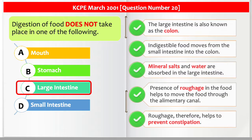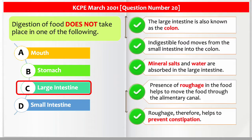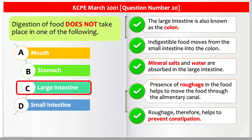The large intestine is also known as the colon. Indigestible food moves from the small intestine into the colon. Mineral salts and water are absorbed in the large intestine. Presence of roughage in the food helps to move the food through the alimentary canal. Roughage, therefore, helps to prevent constipation.